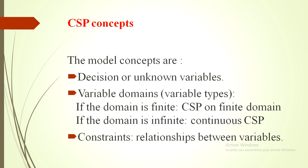Because CSP is a model, it has concepts which form this model. The model concepts are decision or unknown variables, variable domains which give us the variable types. If the domain is finite, we talk about CSP on finite domain. If the domain is infinite, we talk about continuous CSP. And the constraints are the relationships between variables.